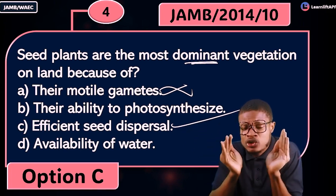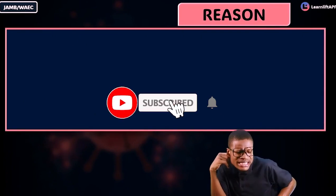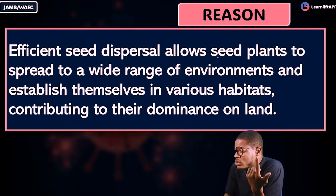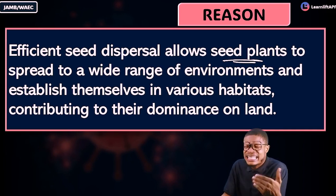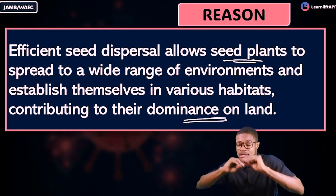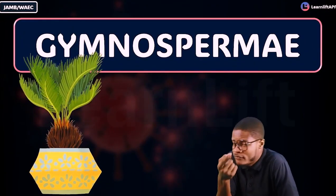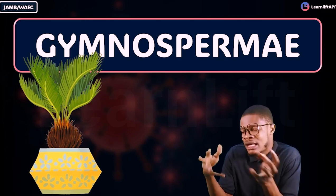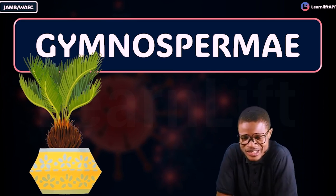Seed plants are the most dominant vegetation on land because of their efficient seed dispersal. This allows seed plants to spread across a wide range of environments, establishing themselves in various habitats — and that contributes to their dominance on land. That covers everything about spermatophytes. Our next lesson, lesson 15, will be all about gymnosperms. Don't forget: spermatophytes are divided into gymnosperms and angiosperms.